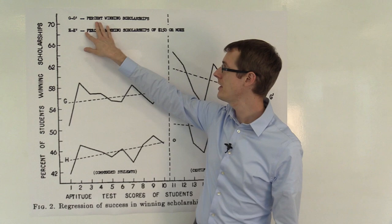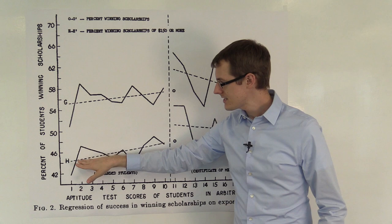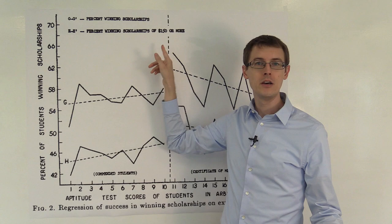The first line, up here labeled G, is just the percentage of students winning any scholarship whatsoever. This line is the percentage of students winning scholarships of $150 or more,